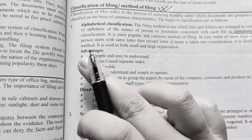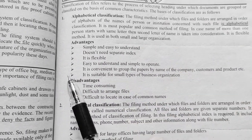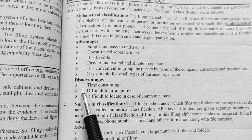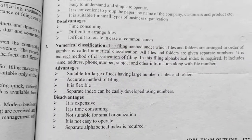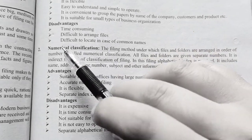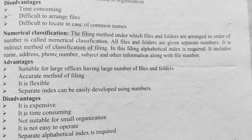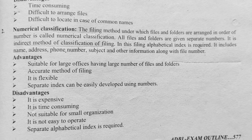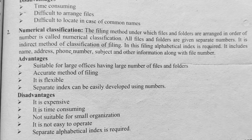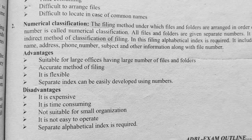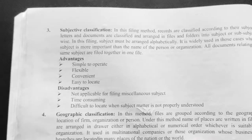It is a flexible method and is used in both small and large organizations. Here are some of the advantages and disadvantages of alphabetical classification. Coming to the next classification: numerical classification. Certain files or folders are arranged according to numbers, such as one, two, three, and this is known as numerical classification. Here are some of the advantages and disadvantages of numerical classification.